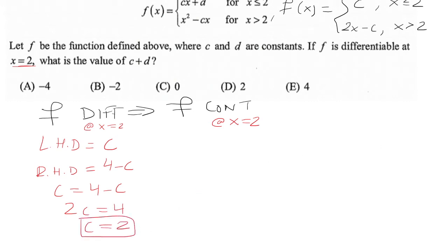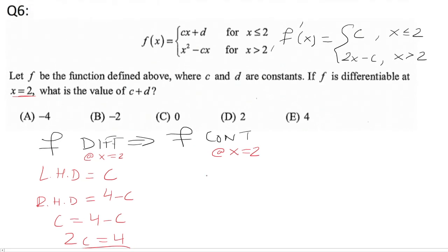Now we're going to look at f being continuous at x equals 2. So you want the two limits to be the same. So whether you do cx plus d, which c we said is 2, so it's 2x plus d, is the same as the limit as x approaches 2 of x squared minus 2x.